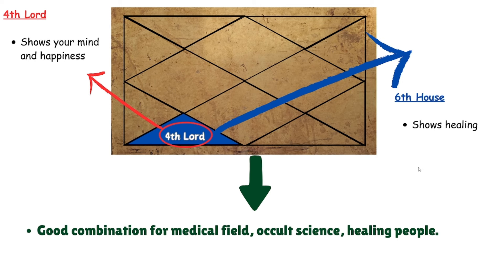The fourth lord shows the mind and happiness, while the sixth house shows healing. This is a good combination if you want to transform or heal people's lives — such as in the medical field, psychological sciences, or any field where you help people who are distressed and going through troubles, coming in as a savior to transform and heal them. This combination is good for that purpose, provided there are no other afflictions in the chart.